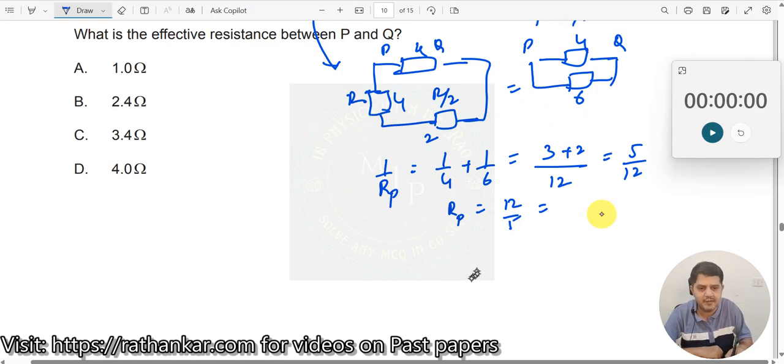Now, what is 12 by 5 once again? 5 times 2 is 10, then again you have 2, 2.4 ohms over here. So, this is your 2.4 ohms. B is the right answer.